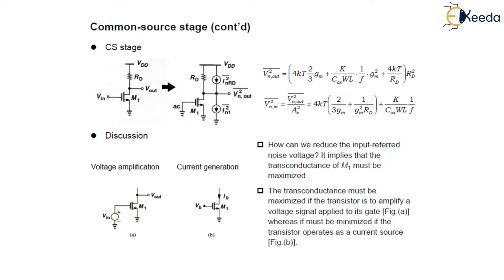The transconductance must be maximized if the transistor is to amplify a voltage signal applied to its gate as shown in this figure A. Whereas it must be minimized if the transistor operates as a constant current source as illustrated in this example. So transconductance must be maximized if we are using the transistor at the input, that is applied to its gate, then the transconductance must be maximized to reduce the input-referred voltage. And if we are using it as a current source, then the transconductance must be minimized.